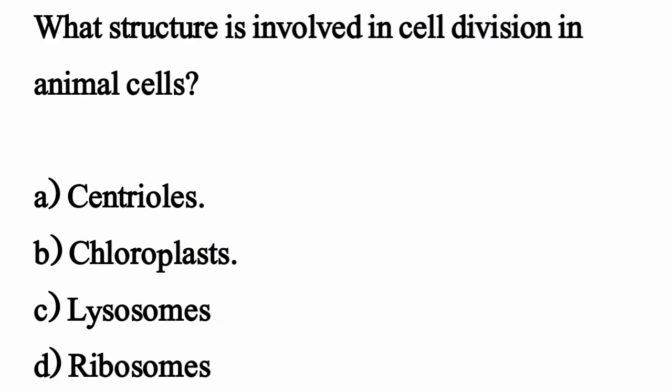What structure is involved in cell division in animal cells? The correct option is Option A: Centrioles.